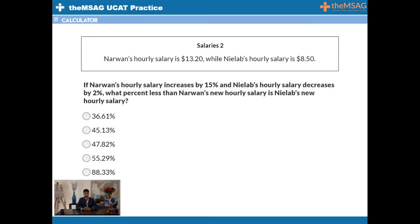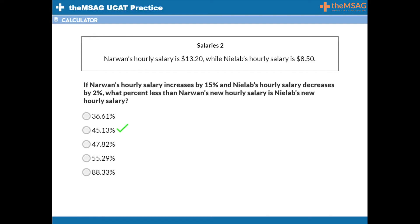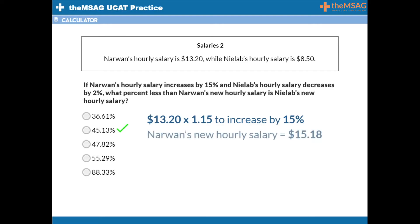Question 6. Narwhan's hourly salary is $13.20, while Neelab's hourly salary is $8.50. If Narwhan's hourly salary increases by 15% and Neelab's hourly salary decreases by 2%, what percent less than Narwhan's new hourly salary is Neelab's new hourly salary? The answer is B, 45.13%. Multiply $13.20 by 1.15 to increase by 15% — this makes Narwhan's new hourly salary $15.18. Multiply $8.50 by 0.98 to reduce it by 2%, giving $8.33.